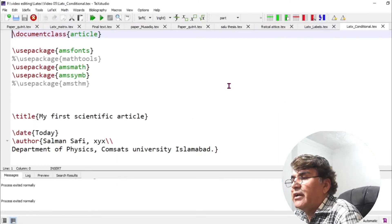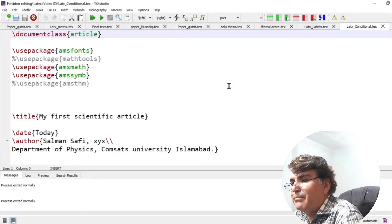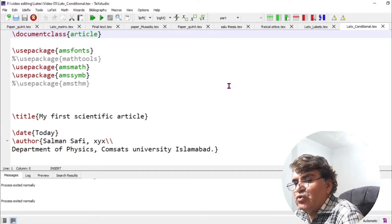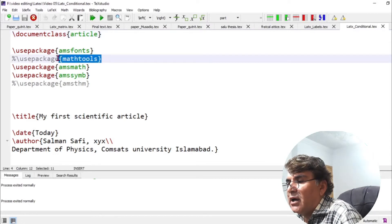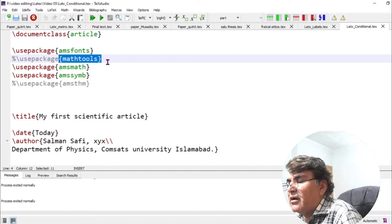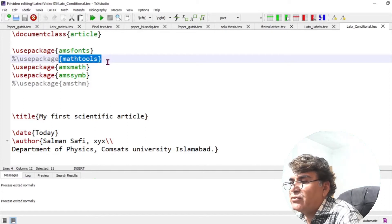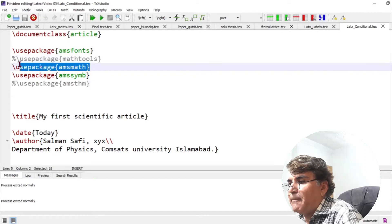Here I am working in document class article and the best way to write conditional equations is to use the package math tool. However, this package is not presently installed on my system. Therefore, I would try to write it down by using amsmath package.